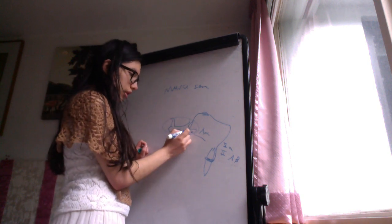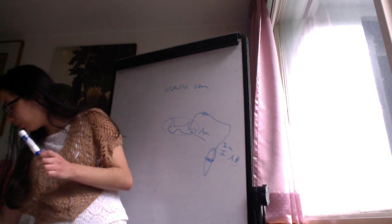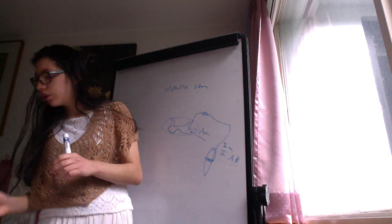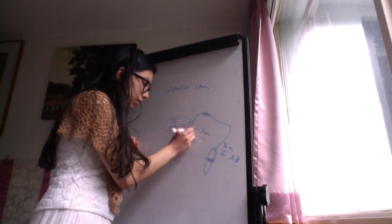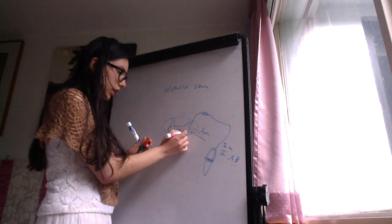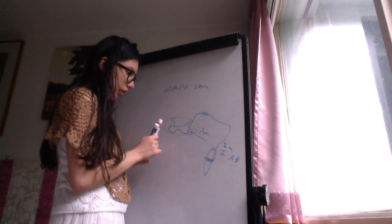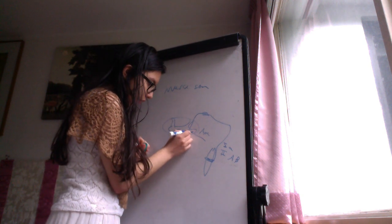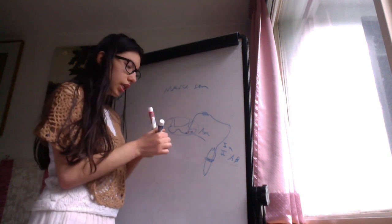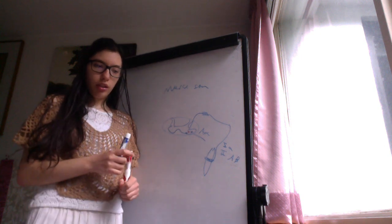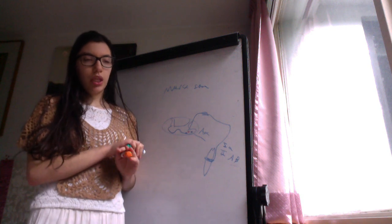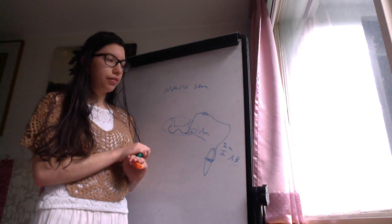And also synapse with an interneuron. So here we have an interneuron, and this interneuron is synapsing with another lower motor neuron. So let's say that we are testing the quadriceps tendon reflex, or the patellar reflex.